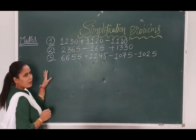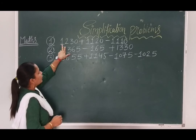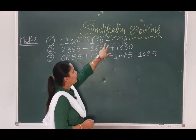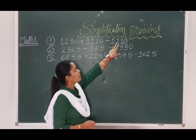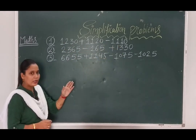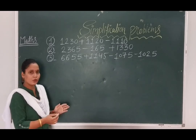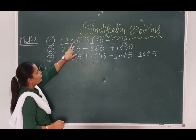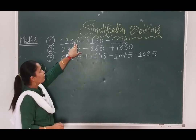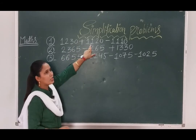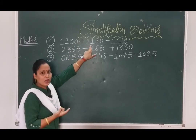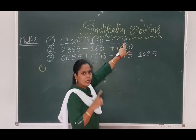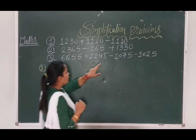Question number 1 is: 1220 plus 1120 minus 1110. How to write and solve this question? First, we have to observe the addition sign. We have to add the first two digits, then whatever answer comes, we subtract the third digit. This is how we write and solve.